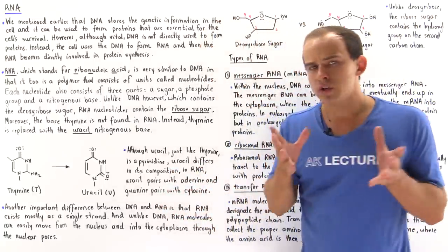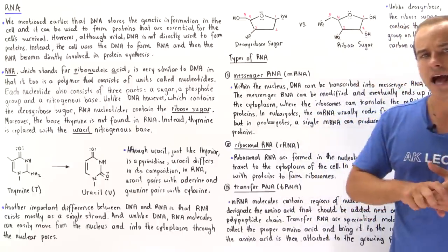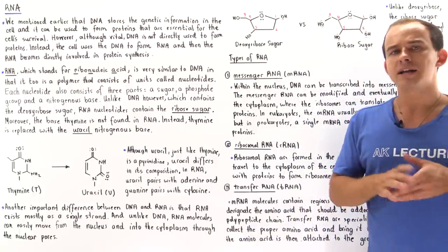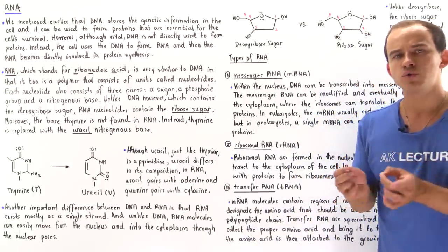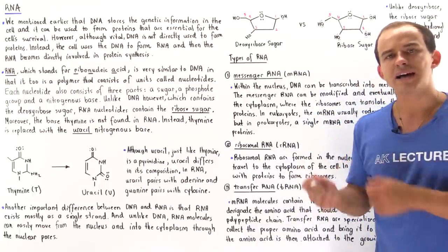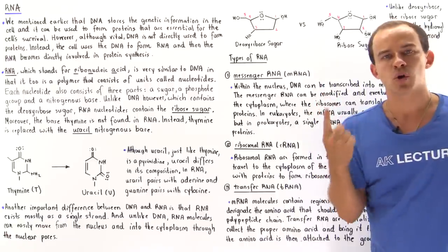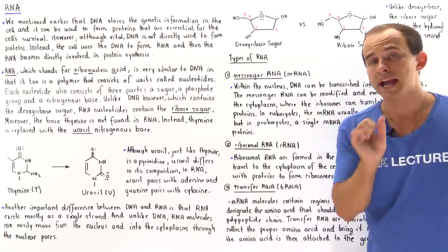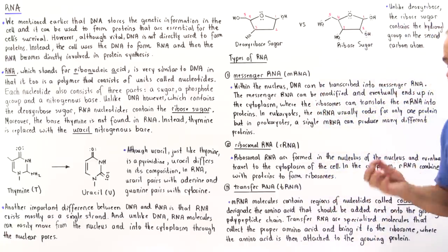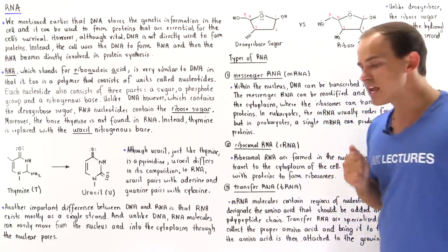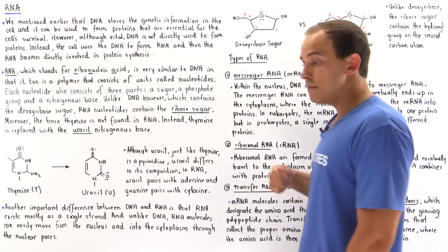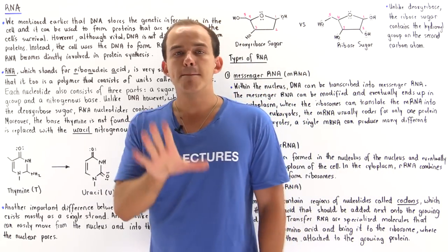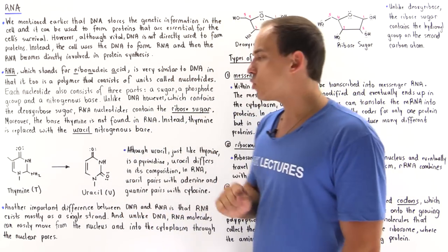In eukaryotic cells, mRNA is usually used to synthesize a single protein. However, in prokaryotic organisms, a single mRNA molecule can be used to synthesize many different proteins.